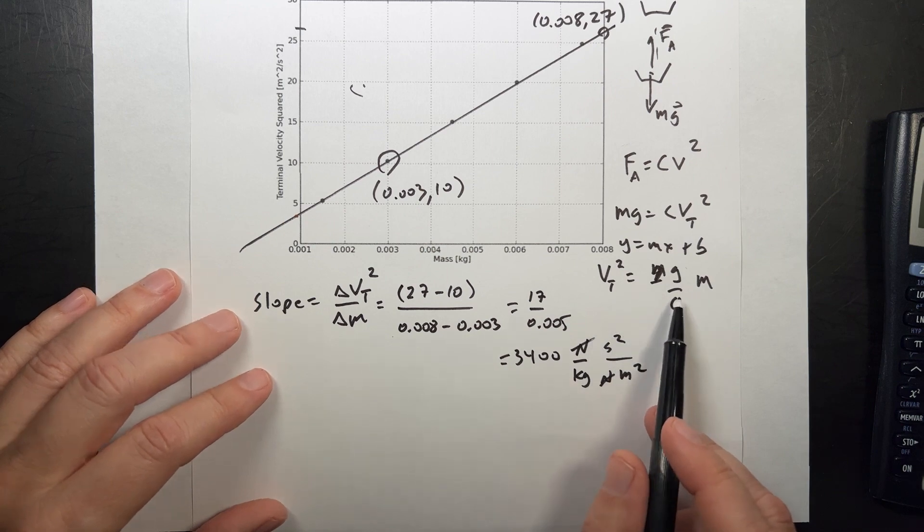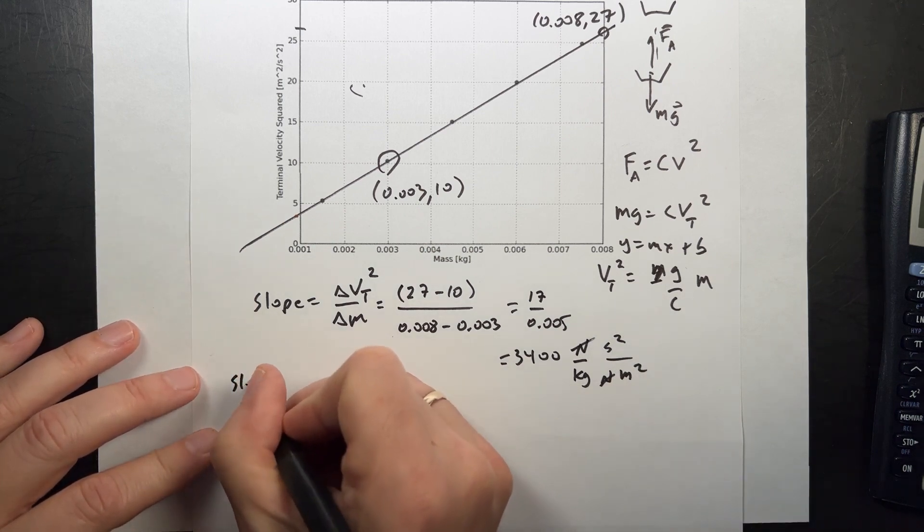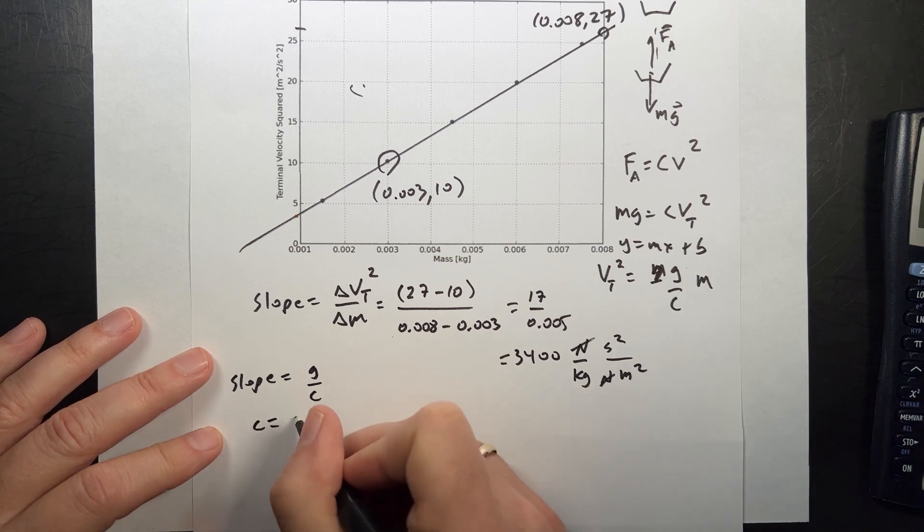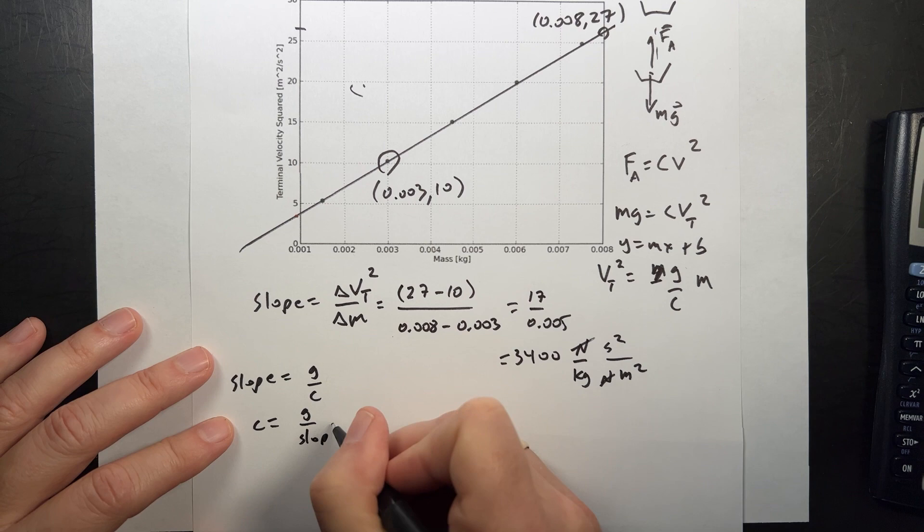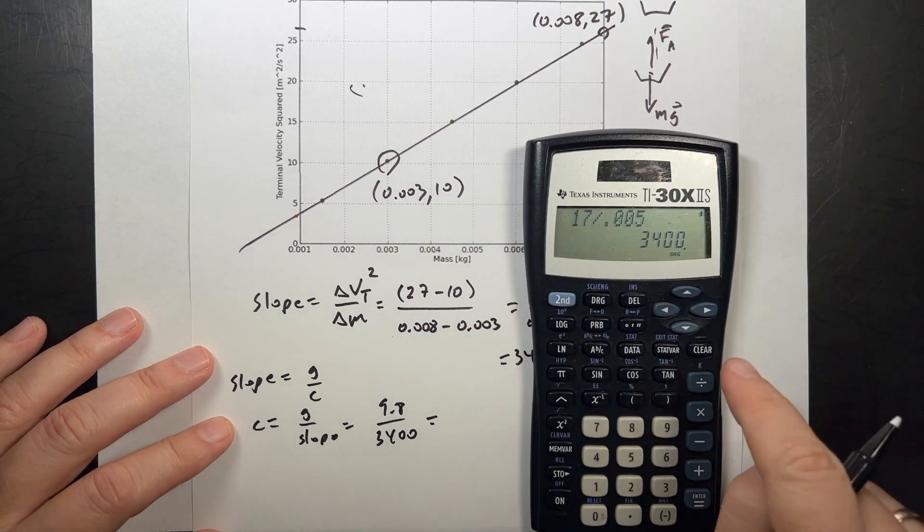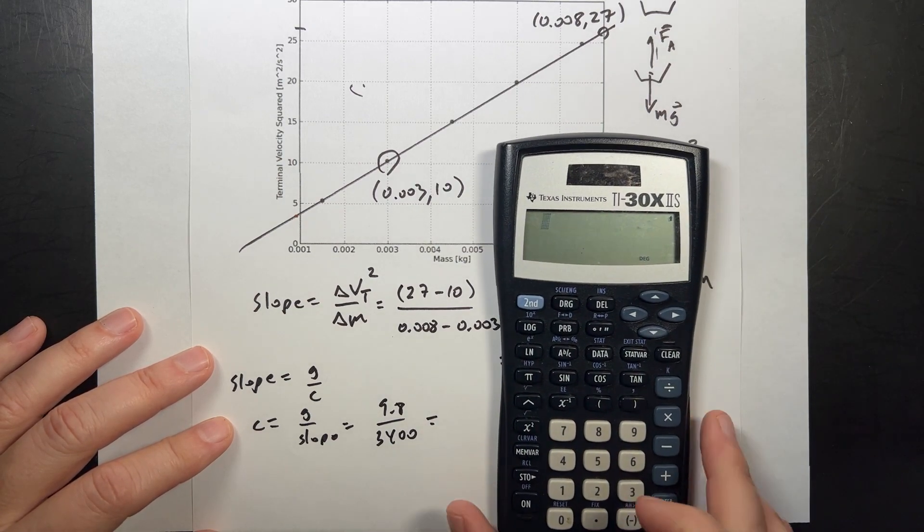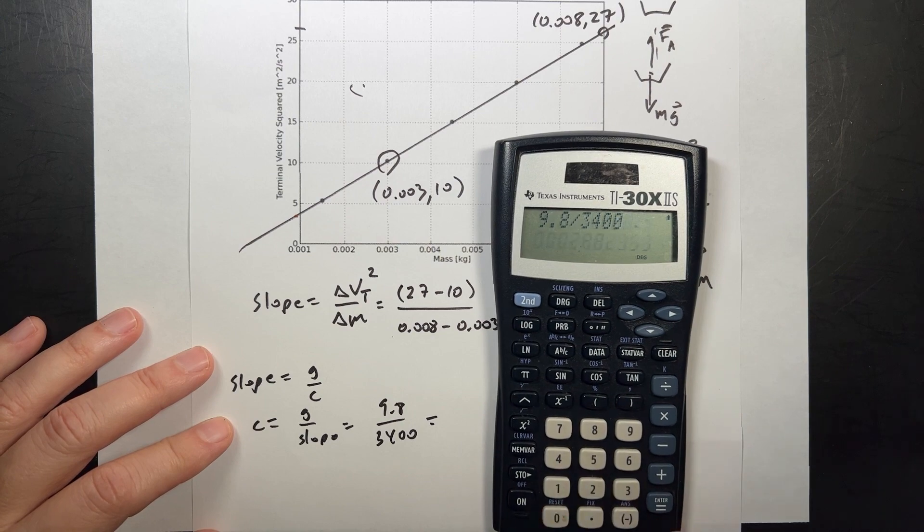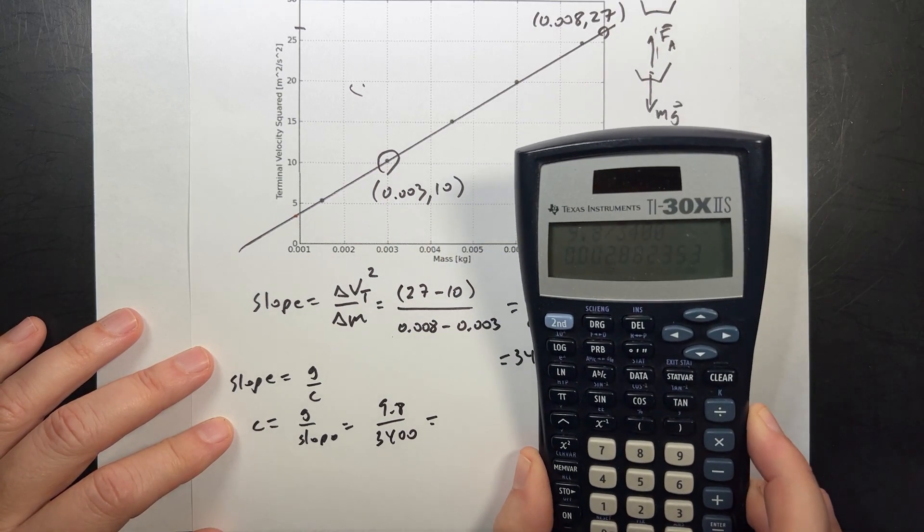Okay, so that's the slope. Now, I want to find c, so I can say slope equals g over c, so c is going to be equal to g over the slope. So it's going to be 9.8 divided by 3,400. Let's do that in my calculator. 9.8 divided by 3,400. I'm going to leave off the units, because I don't want to get that wrong. 0.0029.